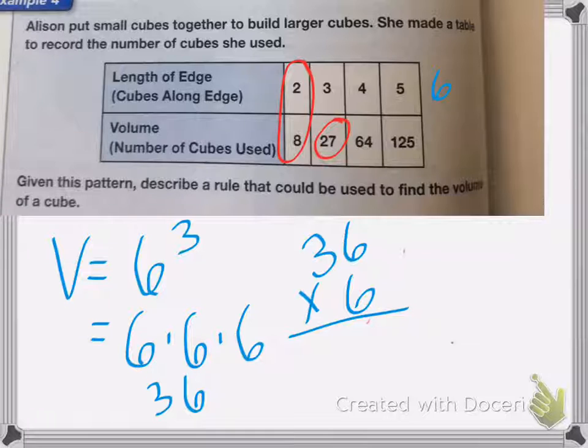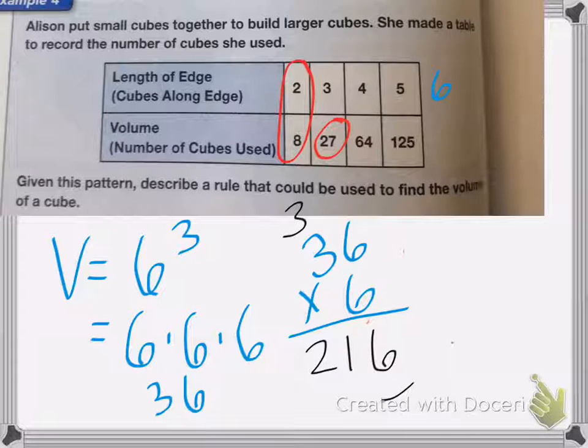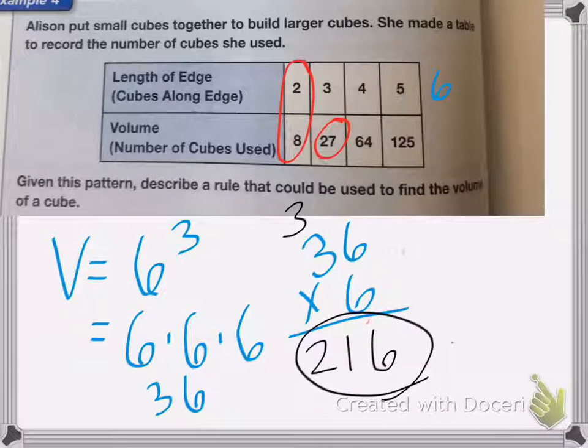All right, 6 times 6 is 36, carry the 3. 6 times 3 is 18, 19, 20, 21. So if I have the length of one of my sides is six, the volume would be 216.